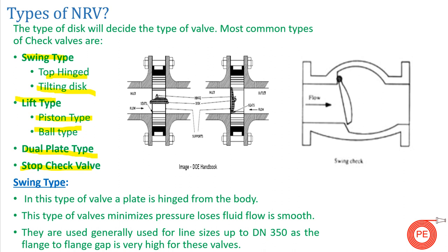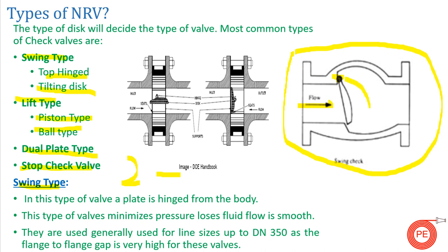A swing check valve — as the name suggests, something will be swinging. A plate is hinged at the top; when the fluid strikes this plate, it opens and flow passes through the open passage. If the flow comes from the reverse direction, the swing closes, preventing return of flow.